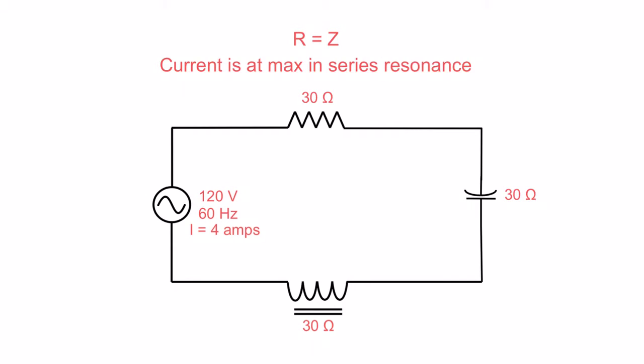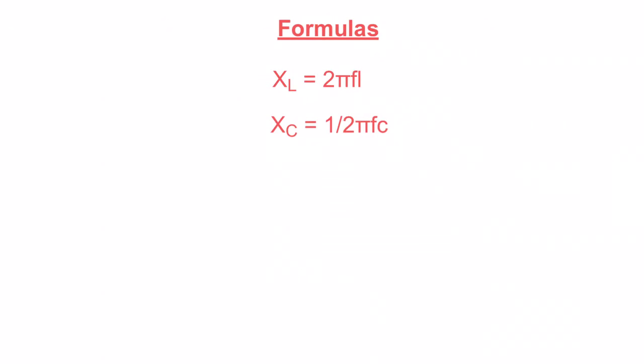So these are two big truths when we're dealing with an RLC series resonance circuit. R is equal to Z, and current is at its maximum in a series resonance circuit. Now we're going to change things up a bit. Like I said before, this frequency controls everything in this resonance. If you change this frequency, it's going to throw this whole circuit out of resonance. This and this will change. Let's take a look at why. We've got to look back at the formulas as to how we get XC and how we get XL. So just a quick refresher. To get XL, we need 2 pi FL. To get XC, we need 1 over 2 pi FC.